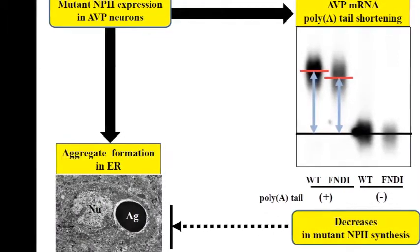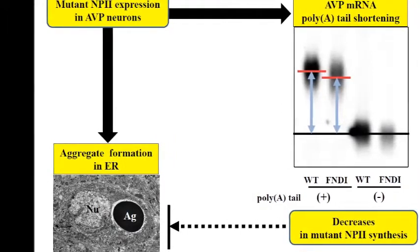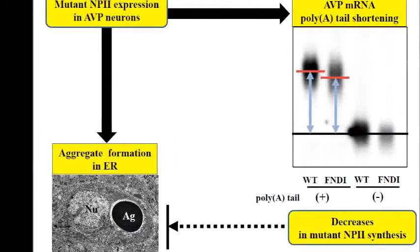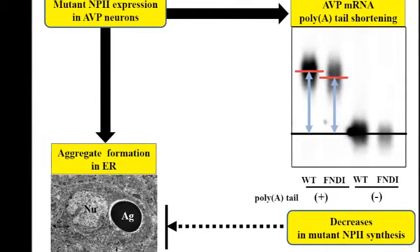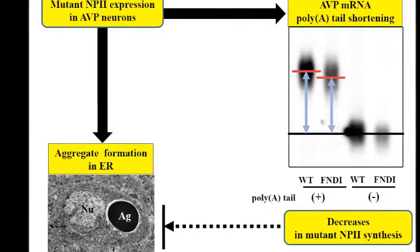There is also diminished axonal expression of neurophysin-2, suggesting that mutant neurophysin-2 may reduce the trafficking of normal neurophysin-2 in FNDI mice by a dominant negative effect.